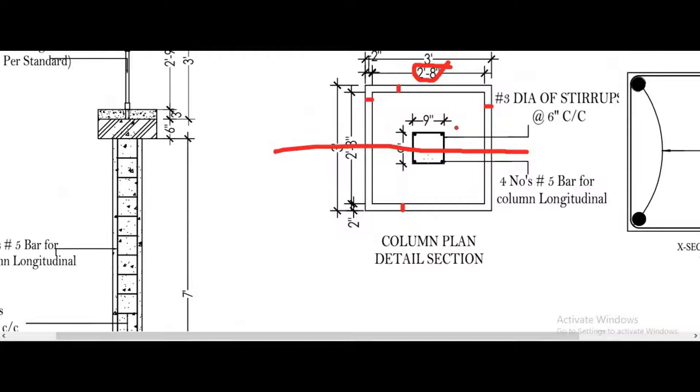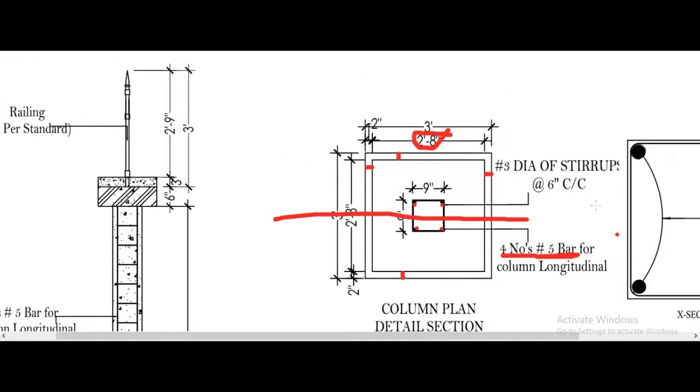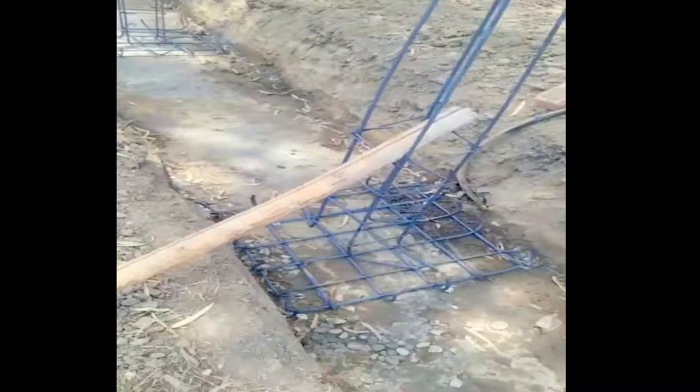The column size is nine inches and four number of column reinforcement are the main longitudinal bars. Its dimensions of bar is five number, five number bars in column and four number bars. So this is one, two, three, four. This is the longitudinal reinforcement in column. Now you will see the actual reinforcement at site.